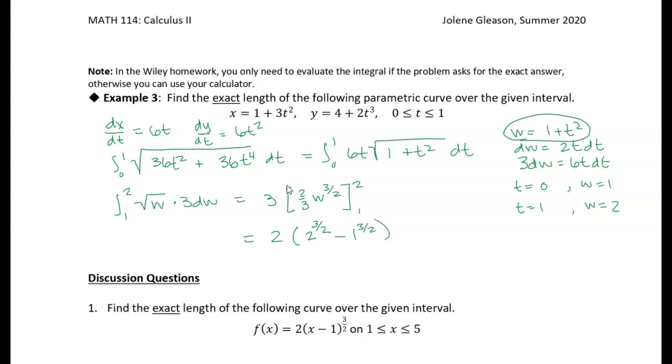Okay, 1 to the 3 halves is 1. 2 to the 3 halves is really 2 times the square root of 2. So what I have is 2 times 2 square root 2 minus 1. Okay, now I could leave it like that. That's perfectly fine. But I can also write it as 4 square root 2 minus 2. All right, so that's my exact answer. That is the length of that curve from 0 to 1.